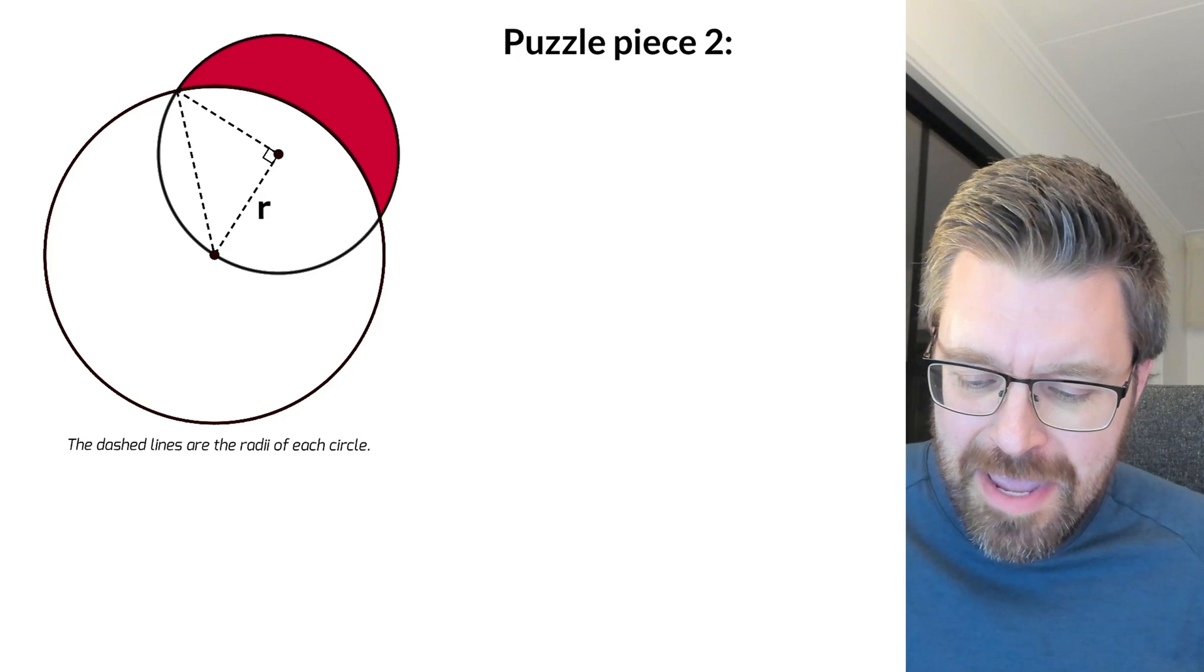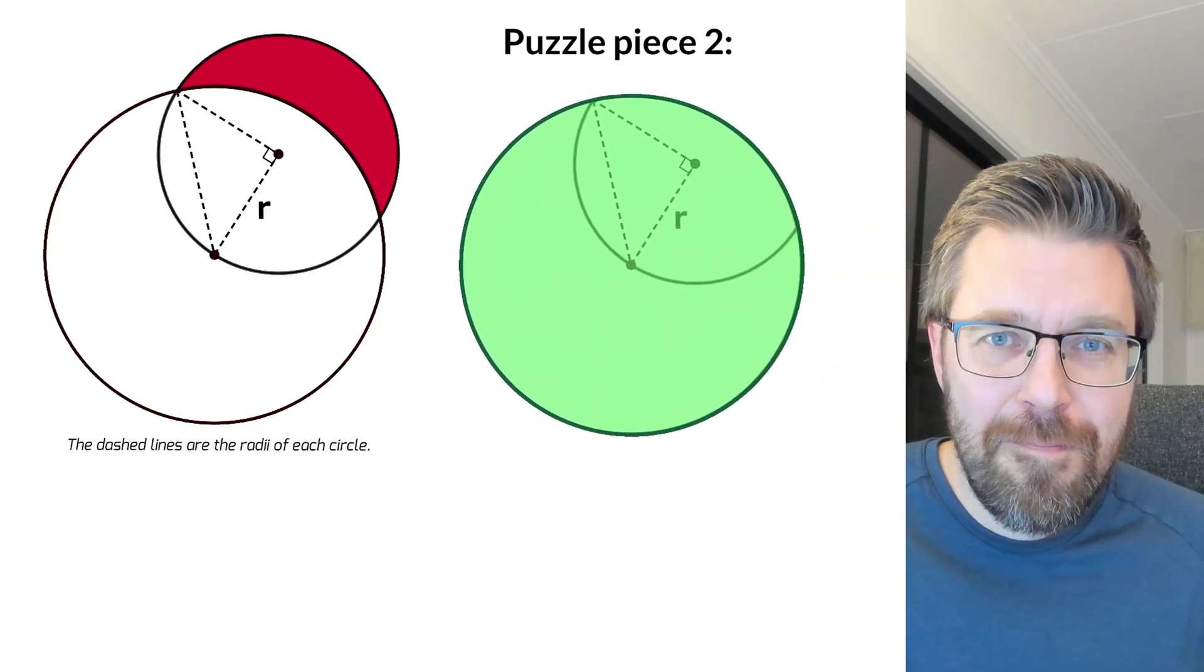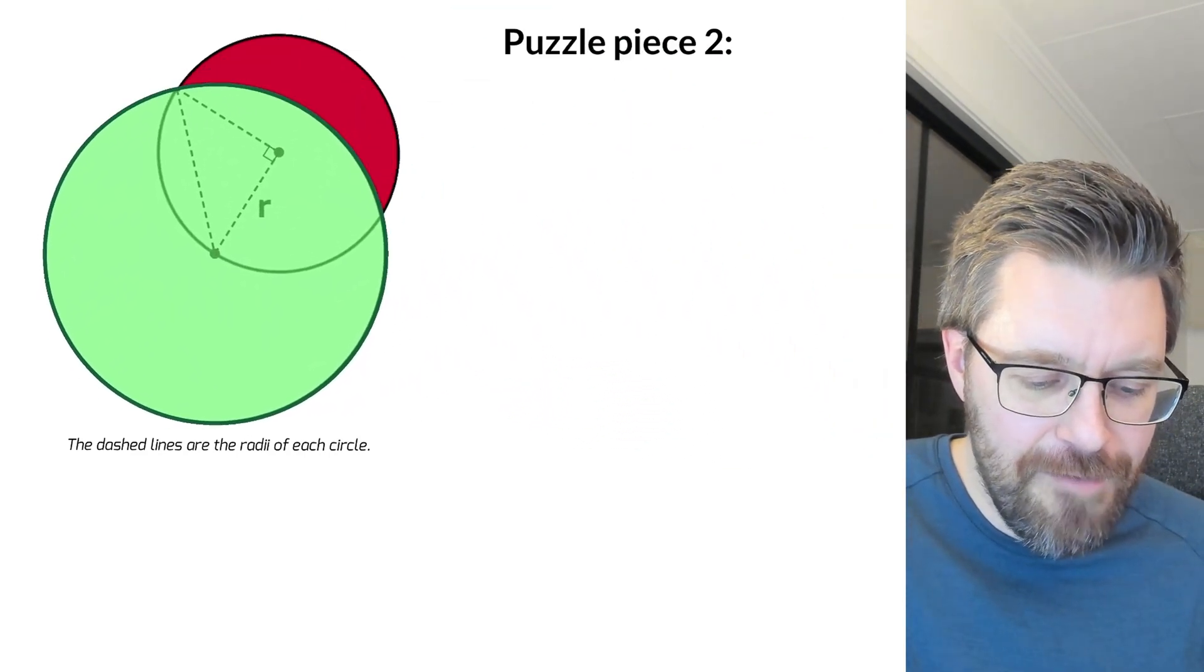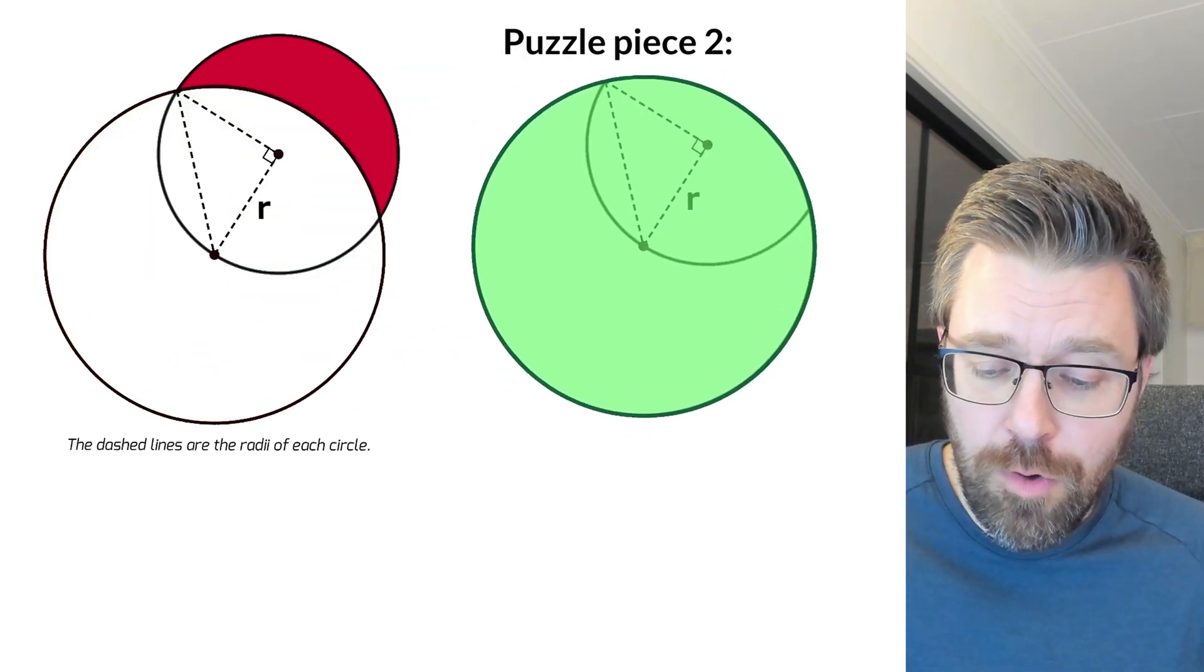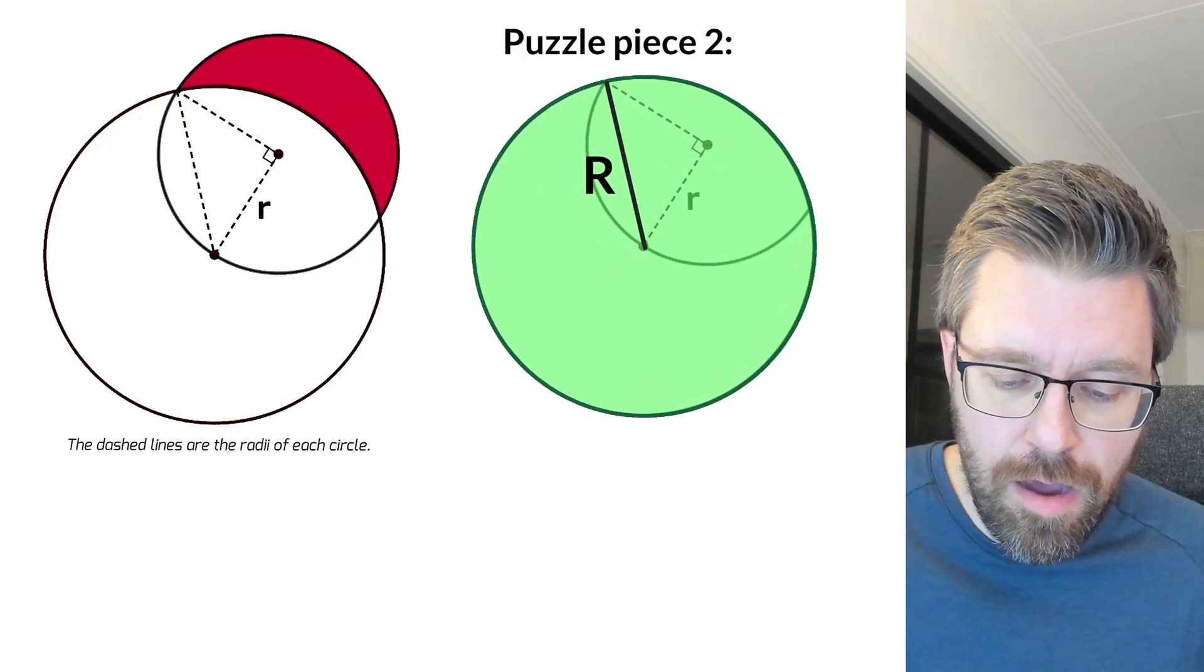Next puzzle piece, it is this big circle. And it fits very well here inside this picture. And in this circle, I will call the radius big R.